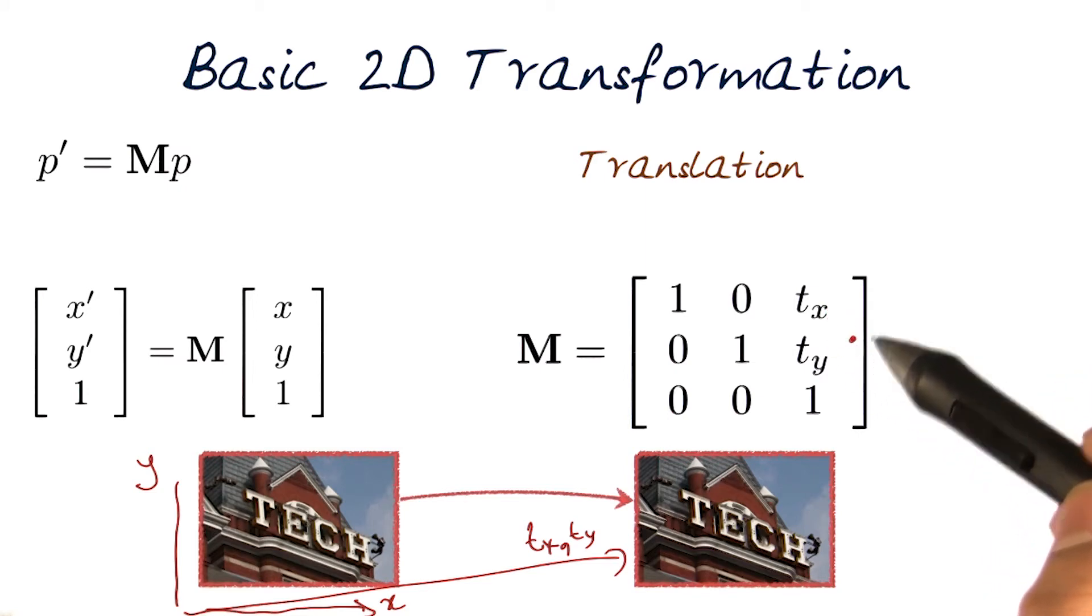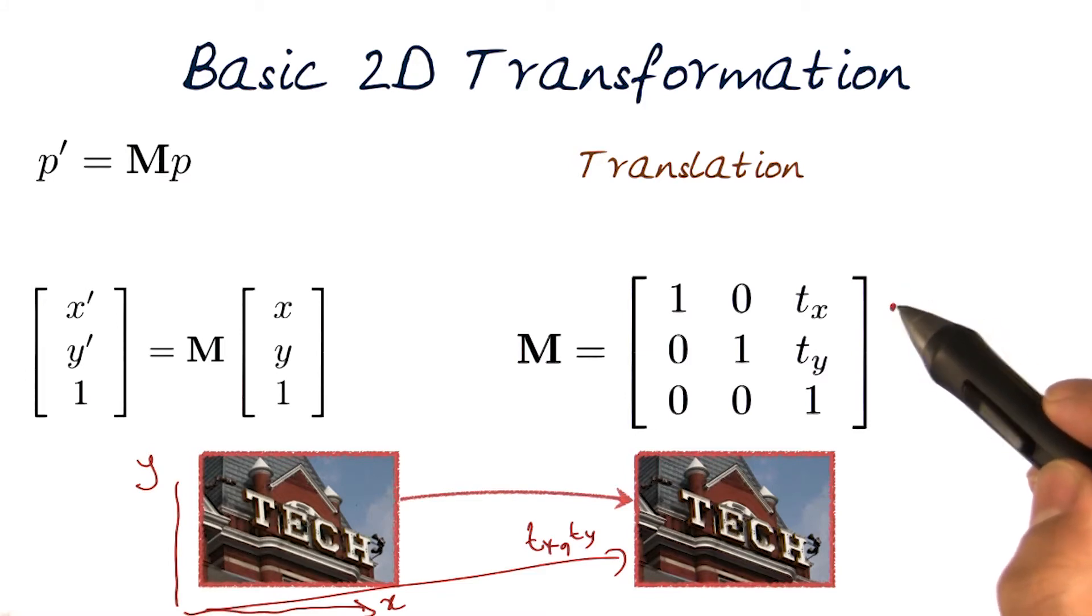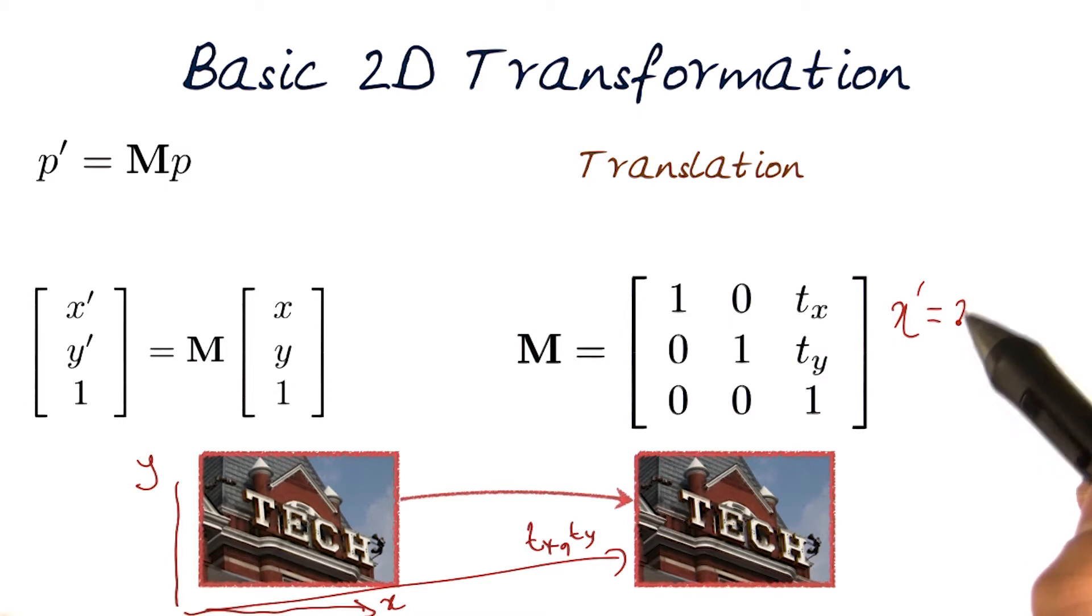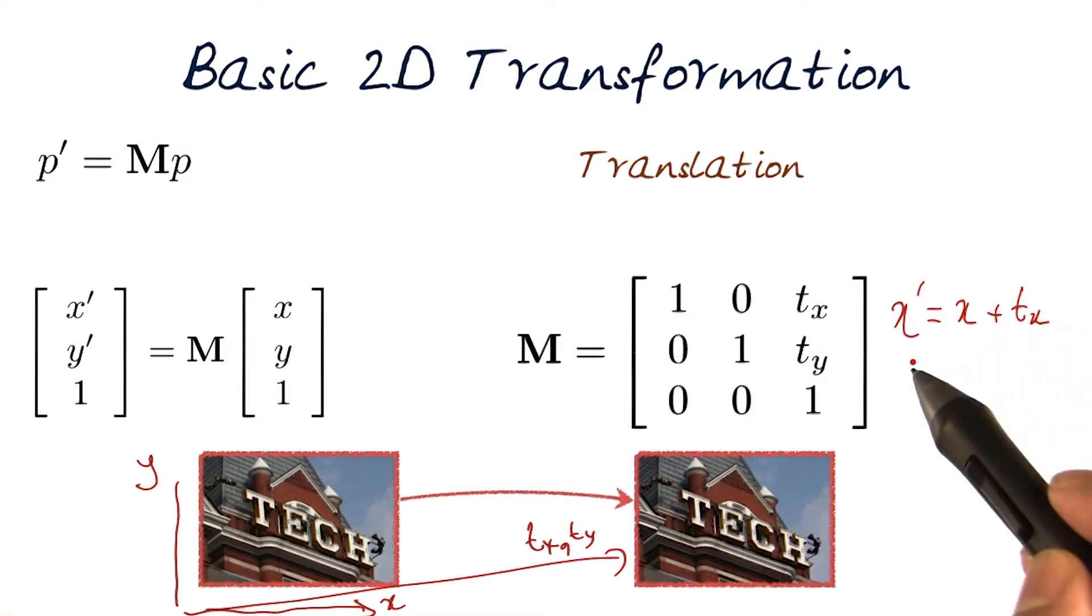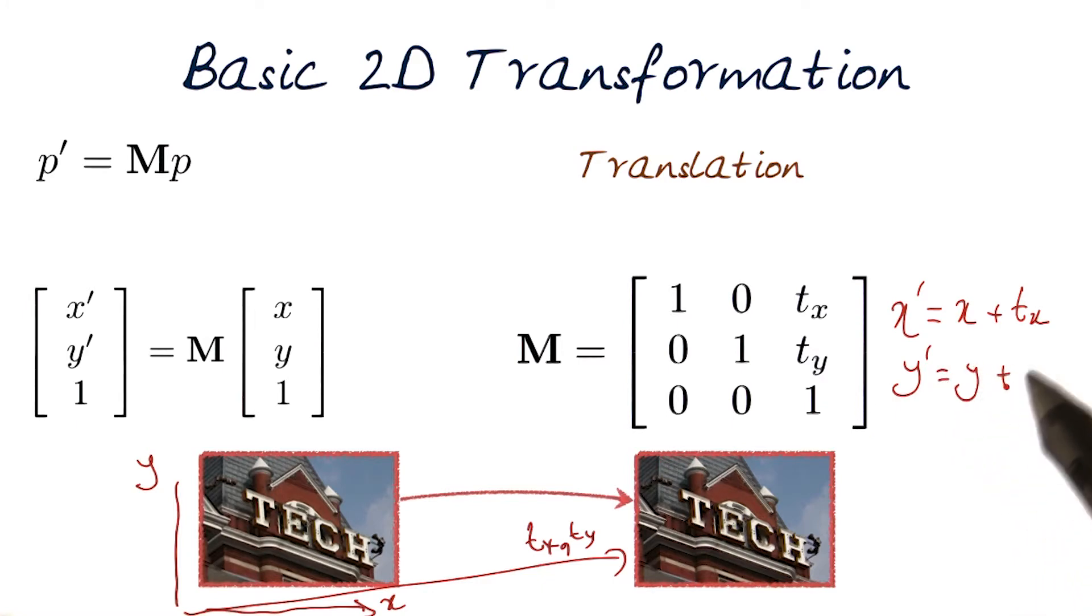you'll basically notice that what we will come up with is x prime is going to be equal to x plus t_x, and y prime would be equal to y plus t_y. That gives us what we wanted. So translation is easily modeled this way.